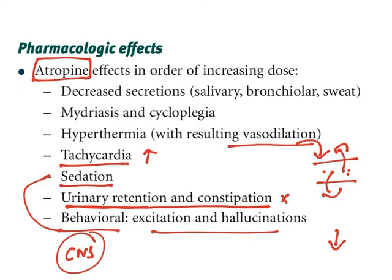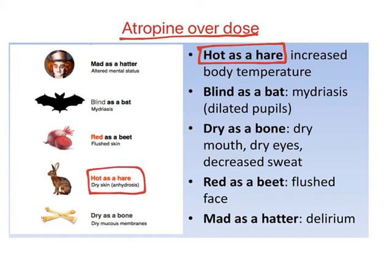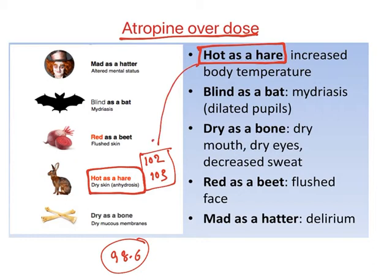Excess dose of atropine results in atropine toxicity. A useful mnemonic describes the signs. 'Hot as a hare' — the normal body temperature of a hare is 102 to 103°F, whereas human body temperature is 98.6°F. Atropine overdose increases body temperature because sweat is decreased, which is the mechanism to control body temperature.